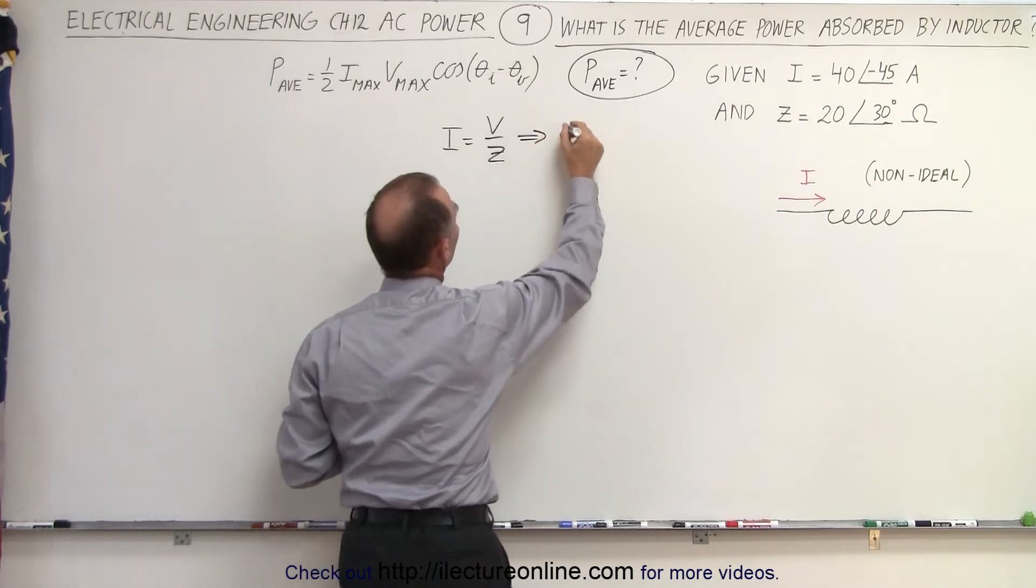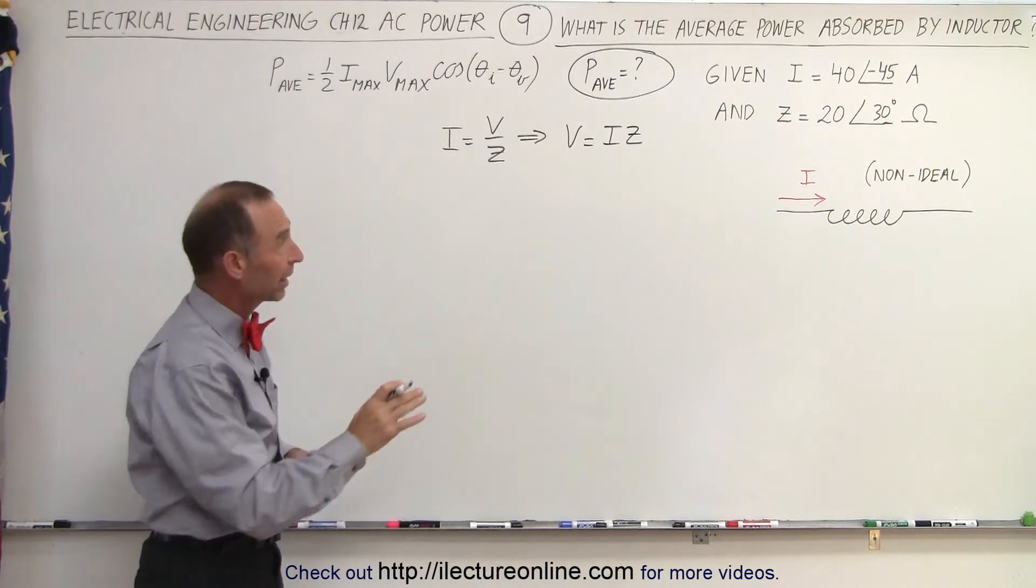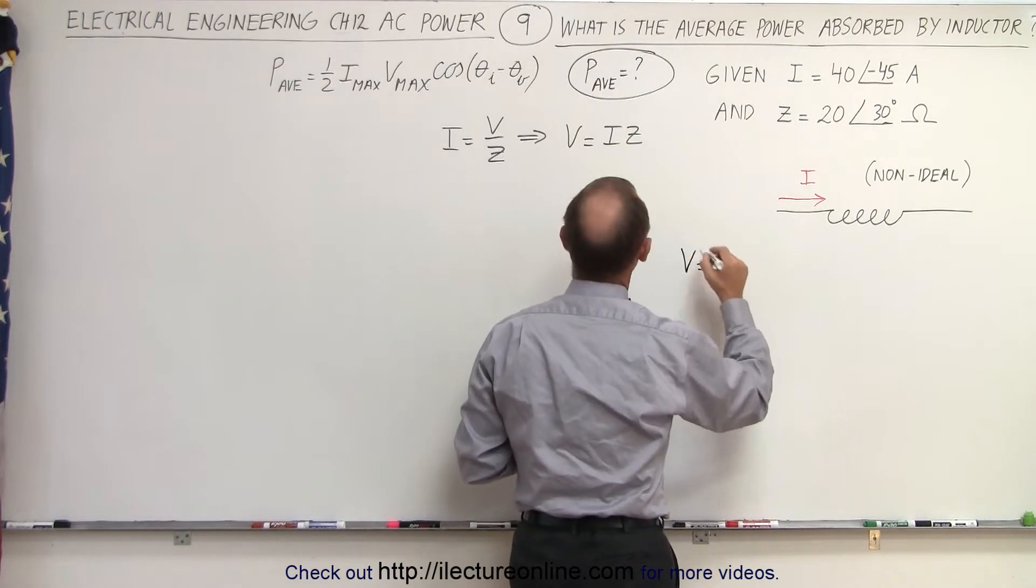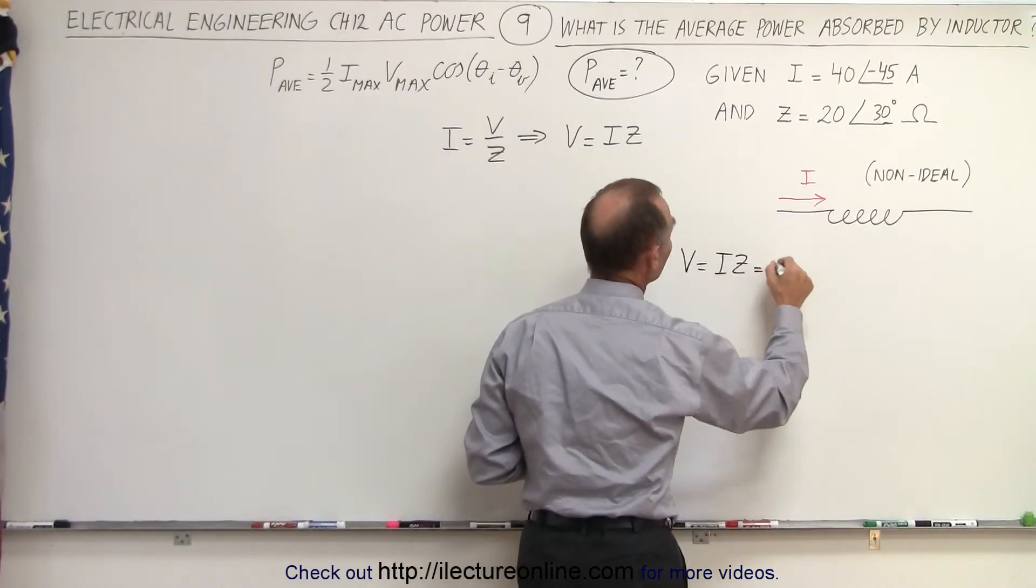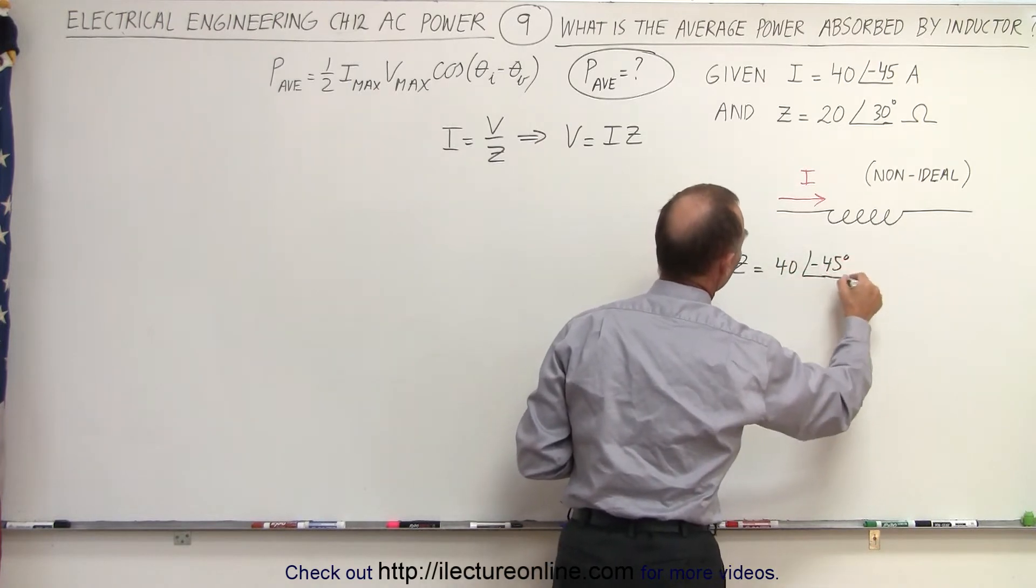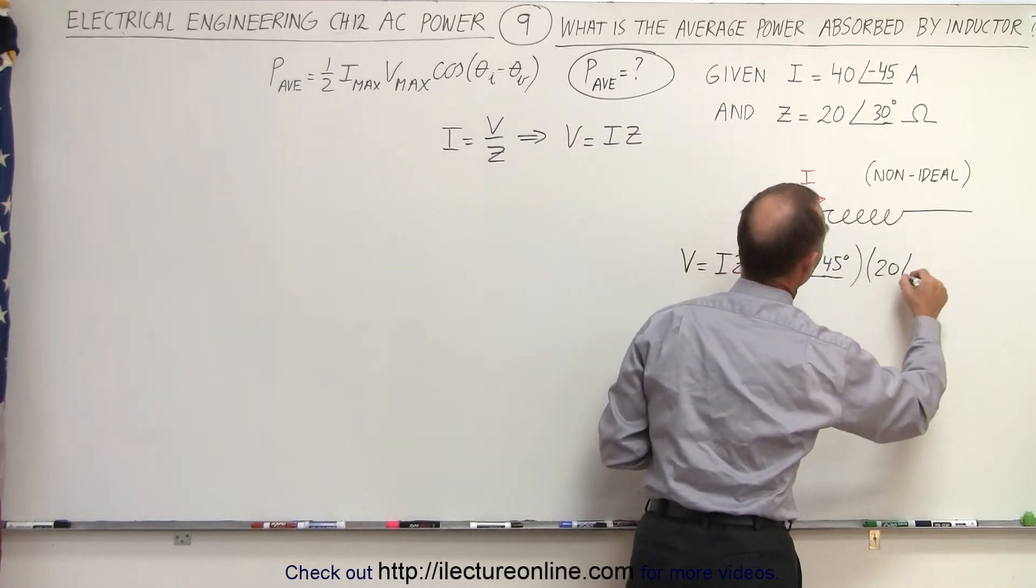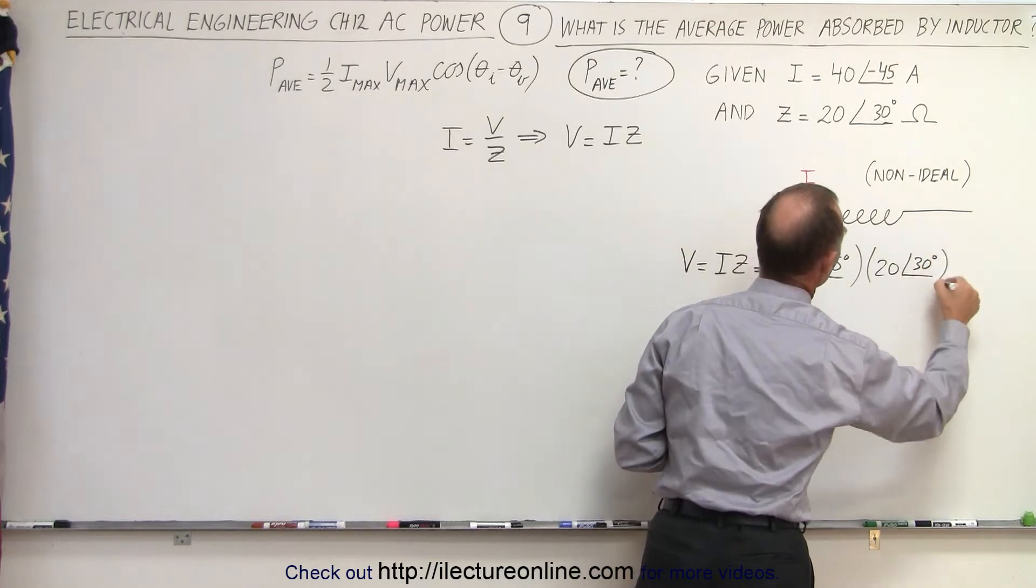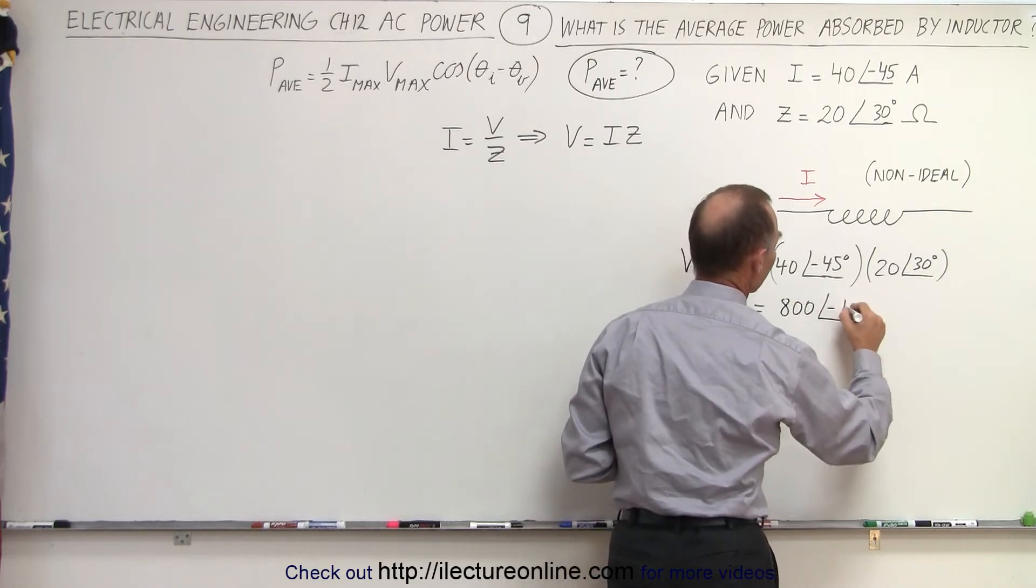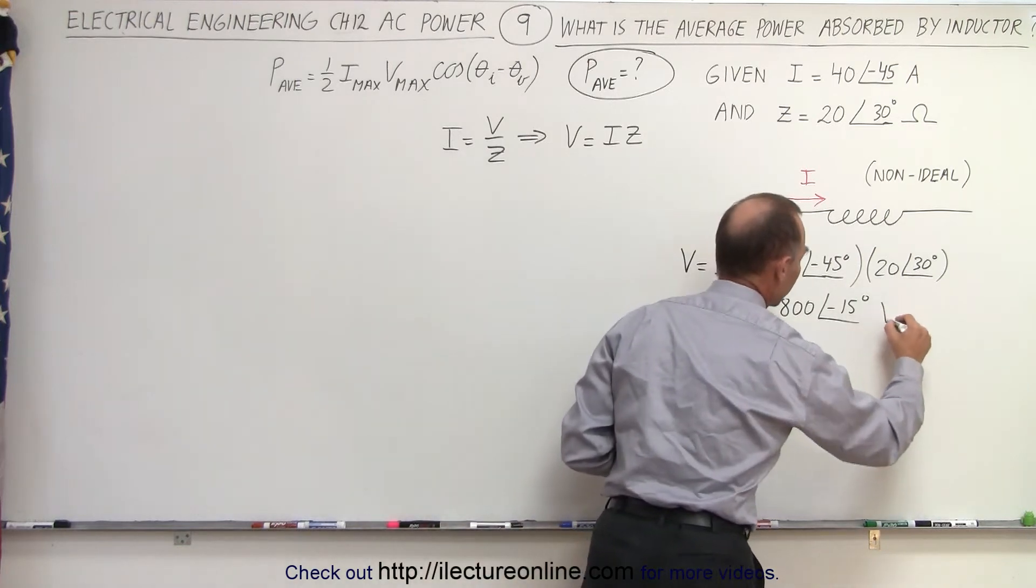From this we can then conclude that the voltage is going to be the product of the current and the impedance. So let's first calculate the voltage, and then we can go ahead and calculate the average power. So the voltage is going to be equal to I times Z, which is equal to 40 with a phase angle of minus 45 degrees. And we're going to multiply that times 20 with a phase angle of 30 degrees. So that gives us 20 times 40, which is 800, with a phase angle of minus 15 degrees. So that will be the voltage, and of course will be in terms of volts.